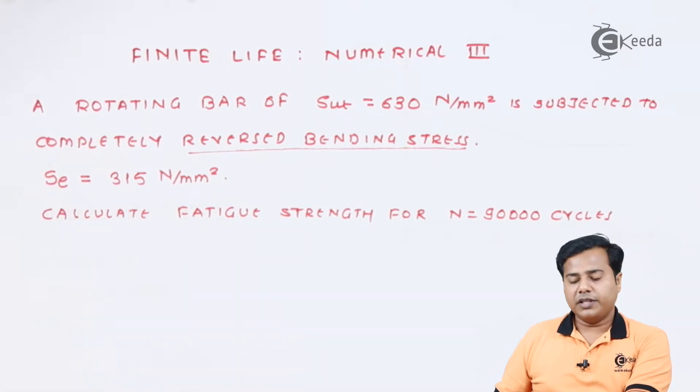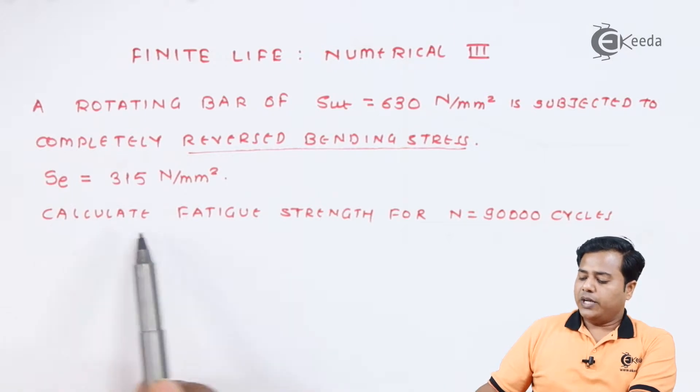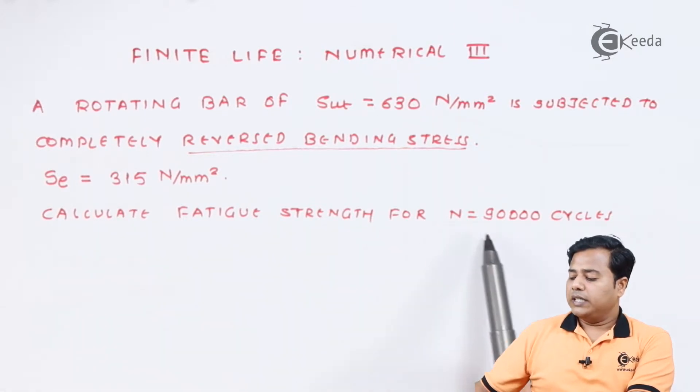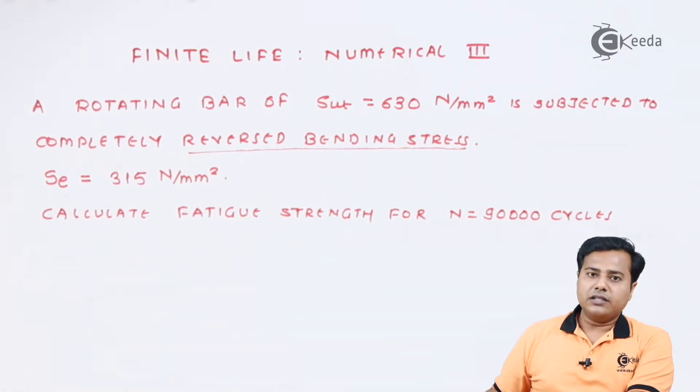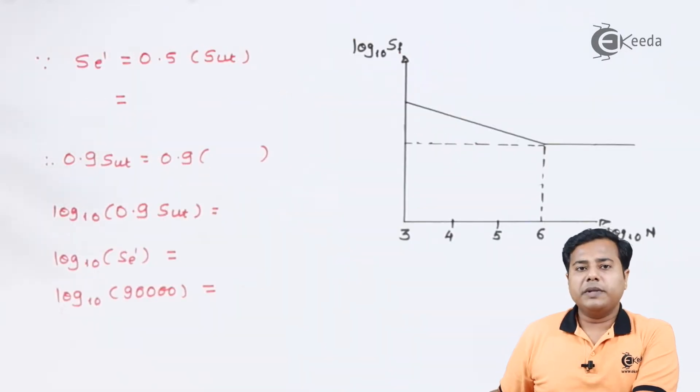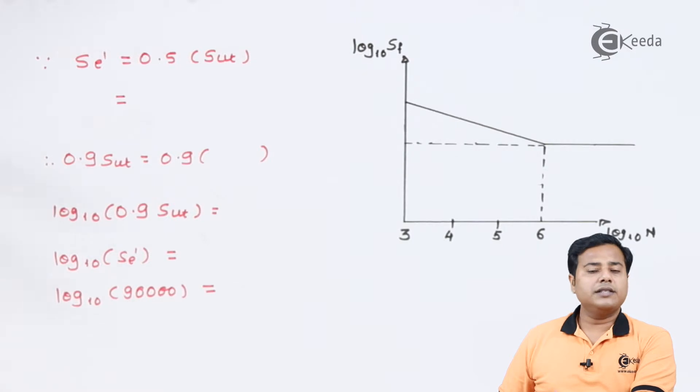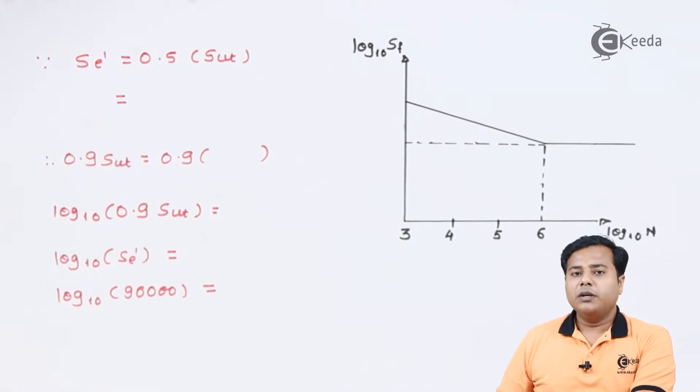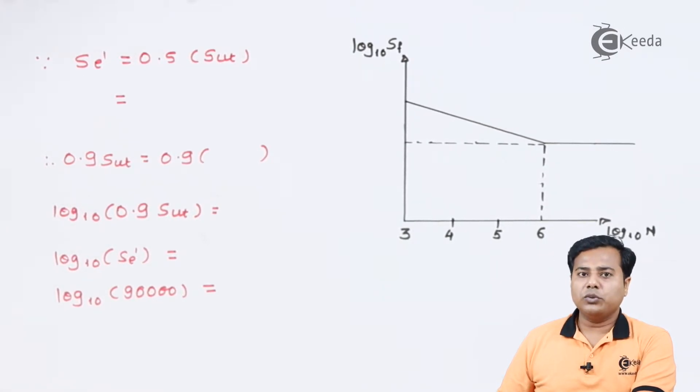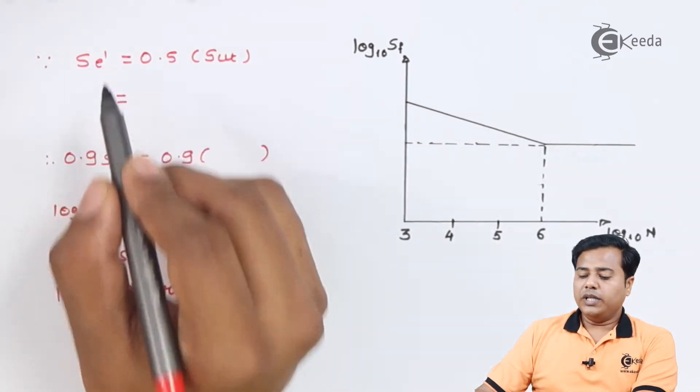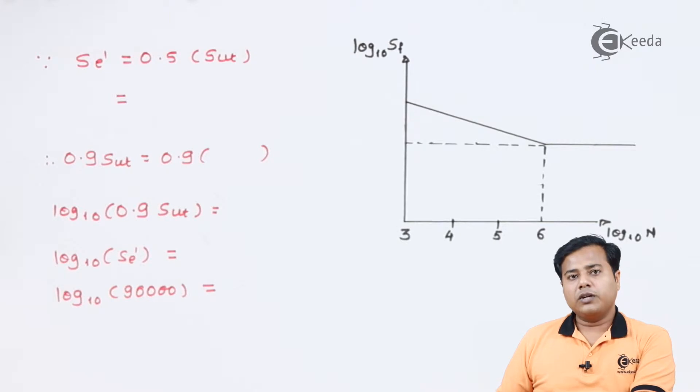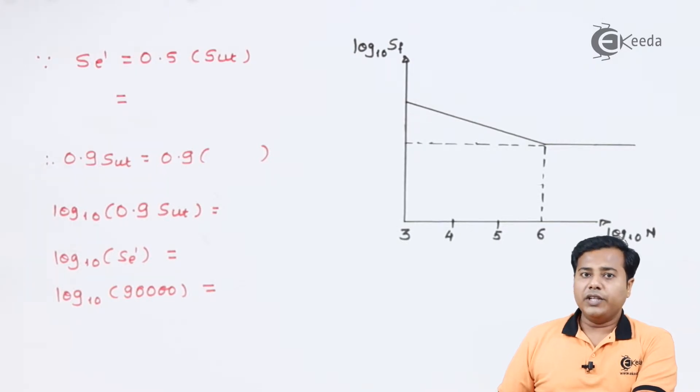So we did not find out the endurance limit separately. We need to calculate the fatigue strength for 90,000 cycles of this particular product in service. Now here it is based on S-N curve, so most prominently we will have to find out the S-N curve and then we will have to proceed. This kind of numerical is quite simple, but the only thing is you have to apply your own logic in order to find out this S-N curve.